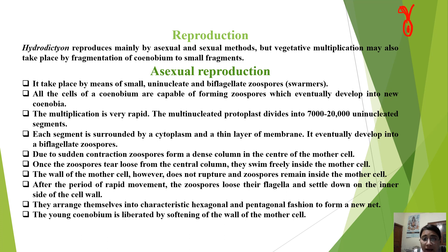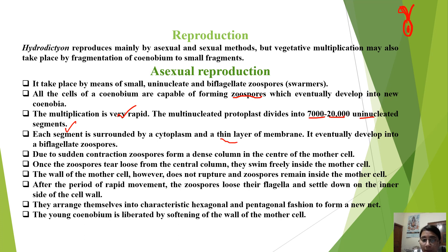All cells of the coenobium are capable of forming zoospores, which eventually develop into a new coenobium — multiplication is very fast. The multinucleated protoplast of the mother cell can divide into 7,000 to 20,000 uninucleated segments. Every segment is surrounded by cytoplasm and a thin layer of membrane, and eventually develops into a biflagellate zoospore.